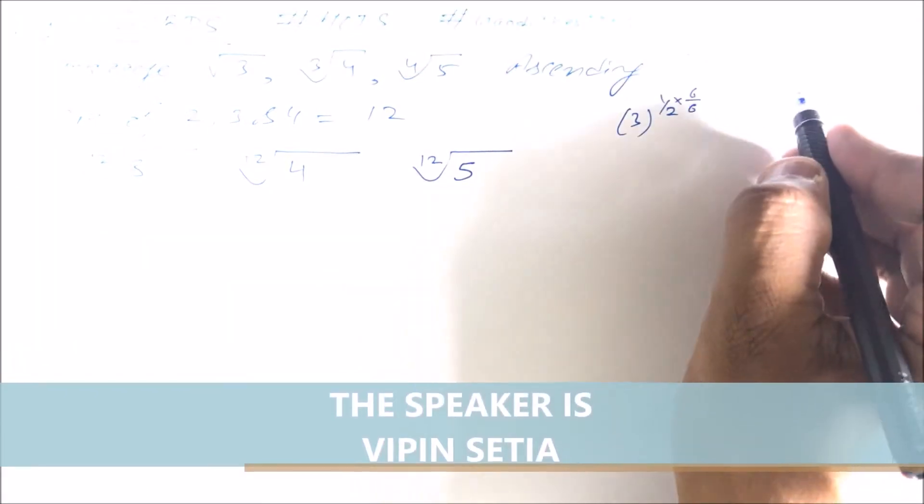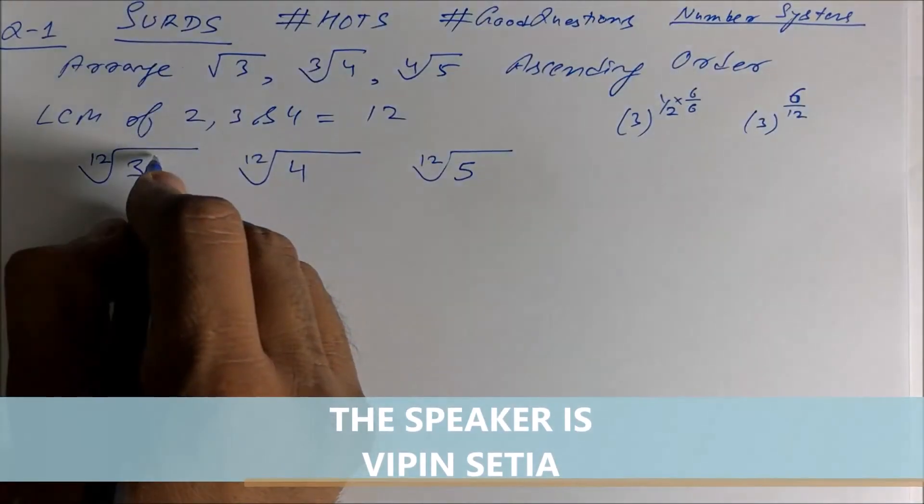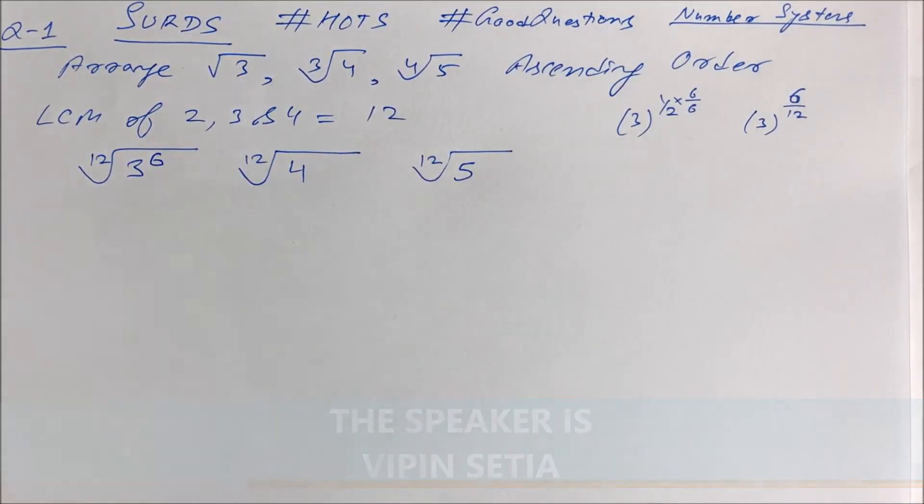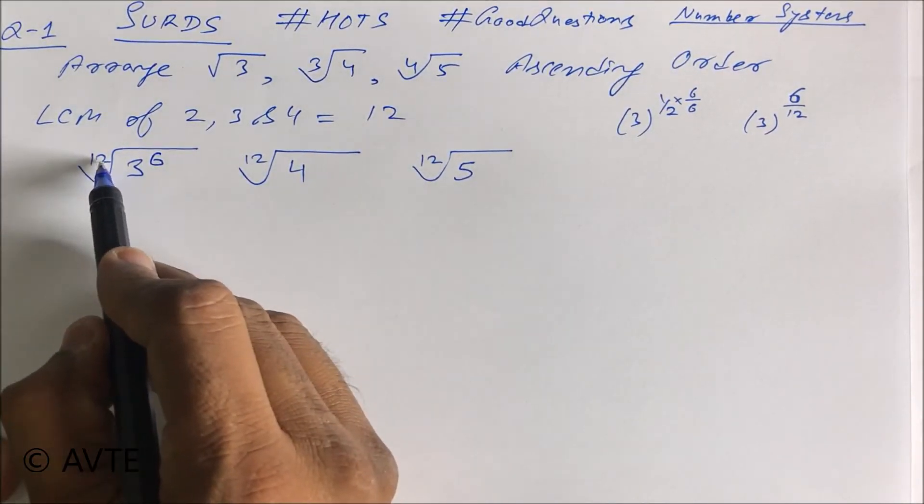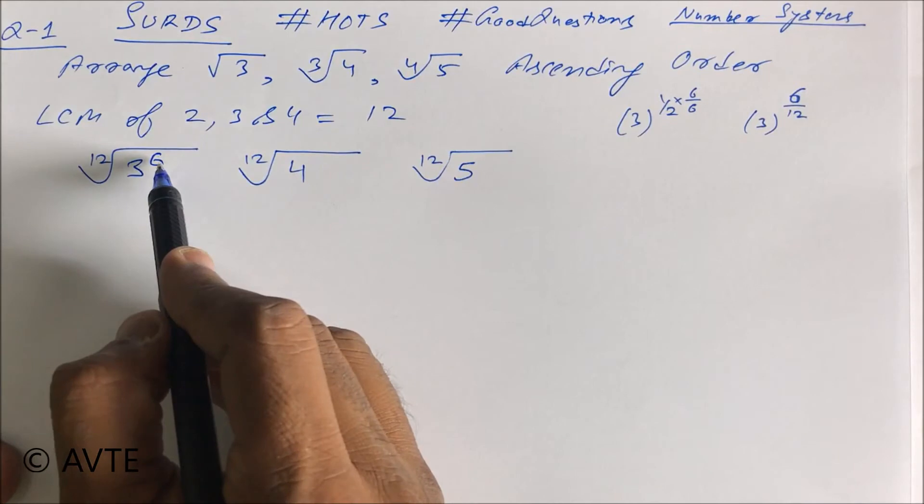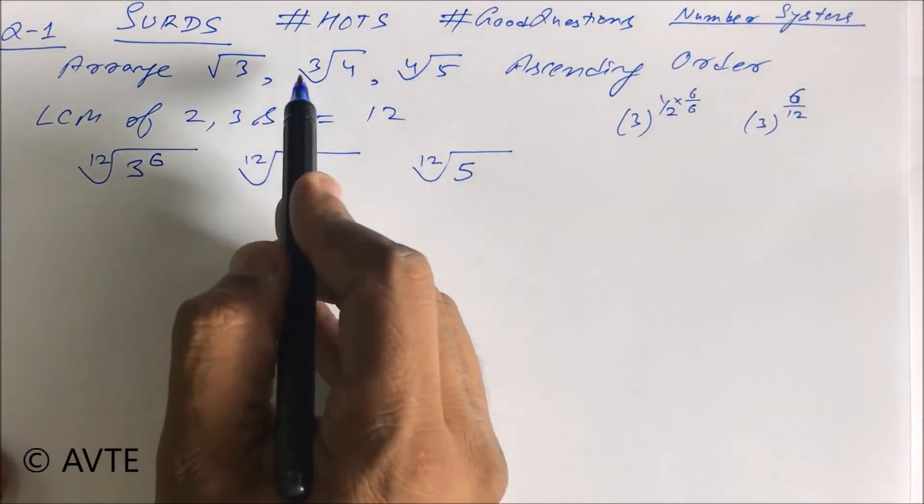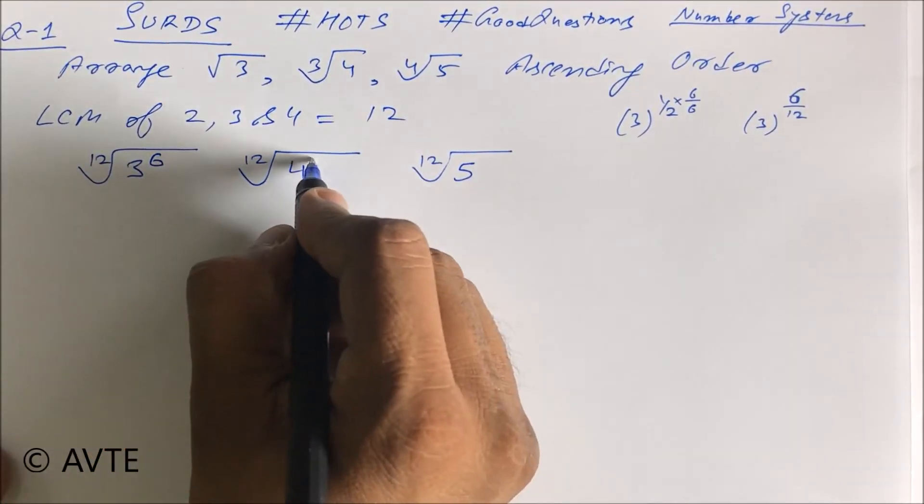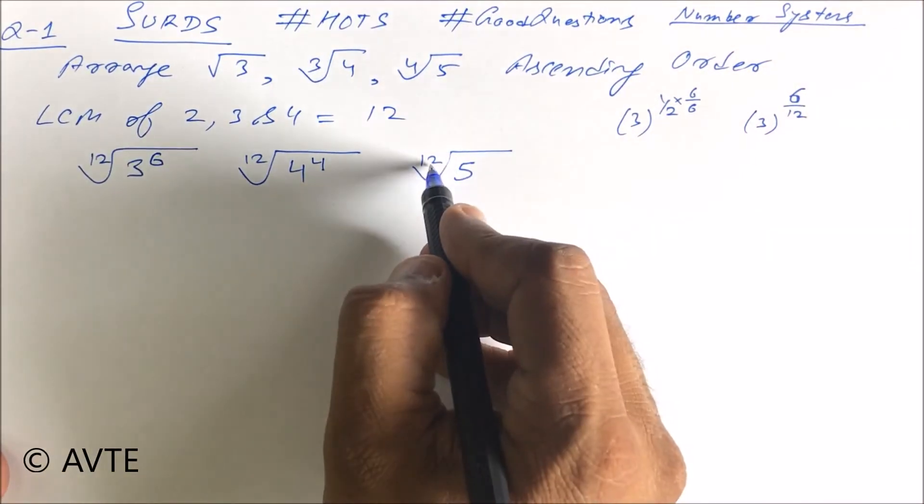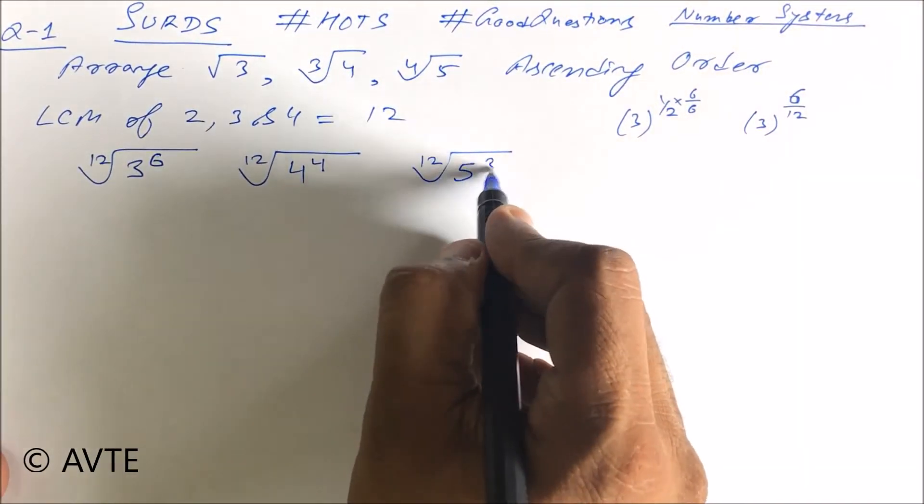So this is 3 raised to power 6. Or you can divide 12 by order 2, that is 6. You can divide 12 by order 3, it is 4. You divide 12 by order 4, it is 3.